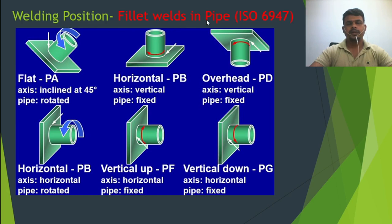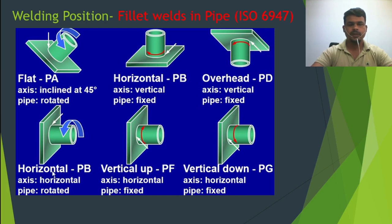Now this is the fillet weld in pipe. The previous one was butt weld. For fillet weld in pipe: PA is flat and inclined at 45 degrees — pipe is rotated, welder is fixed. PB is horizontal — pipe is fixed and vertical. There is also an overhead position where you are welding from the down side — that is PG. Another is horizontal PB with the pipe rotating — the PB or 2F position. Then vertical up PF and vertical down PG.